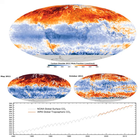Without the greenhouse effect, the Earth's temperature would be about minus 18 degrees Celsius (minus 0.4 degrees Fahrenheit) compared to Earth's actual surface temperature of approximately 14 degrees Celsius. Carbon dioxide is believed to have played an important role in regulating Earth's temperature throughout its 4.7 billion year history.